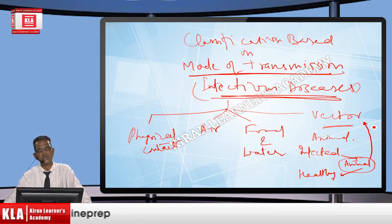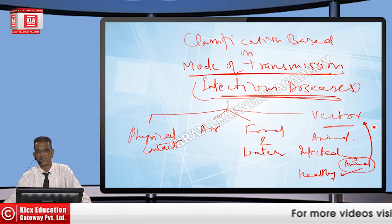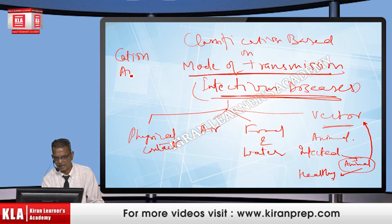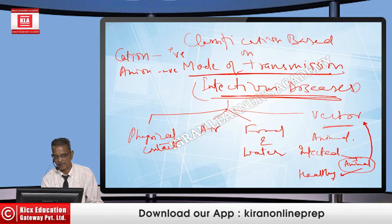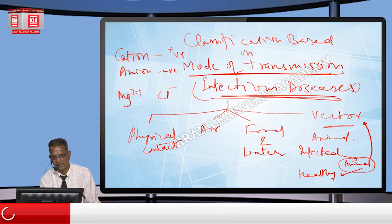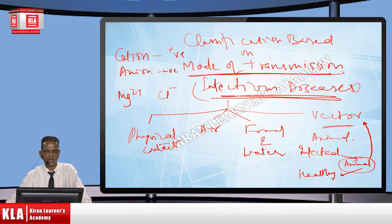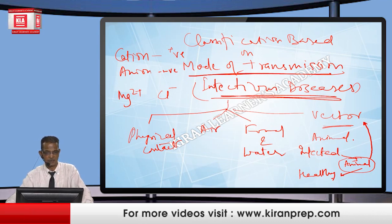Now we will restrict ourselves to diseases caused by minerals. When we talk of minerals, we talk of ions — both cations (positive, like magnesium Mg²⁺) and anions (negative, like chloride Cl⁻). Both cations and anions are important for healthy survival. Here are some questions that have been asked in previous exams.